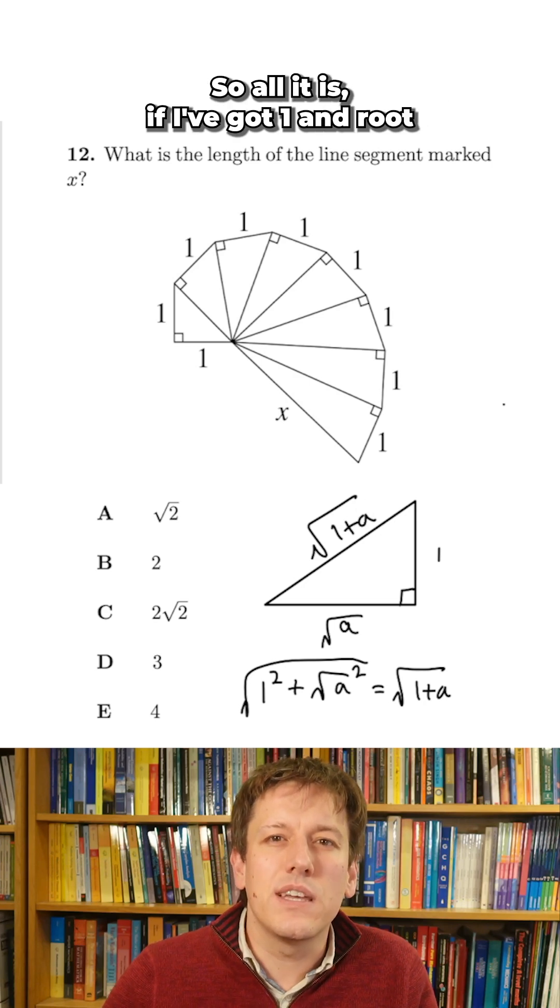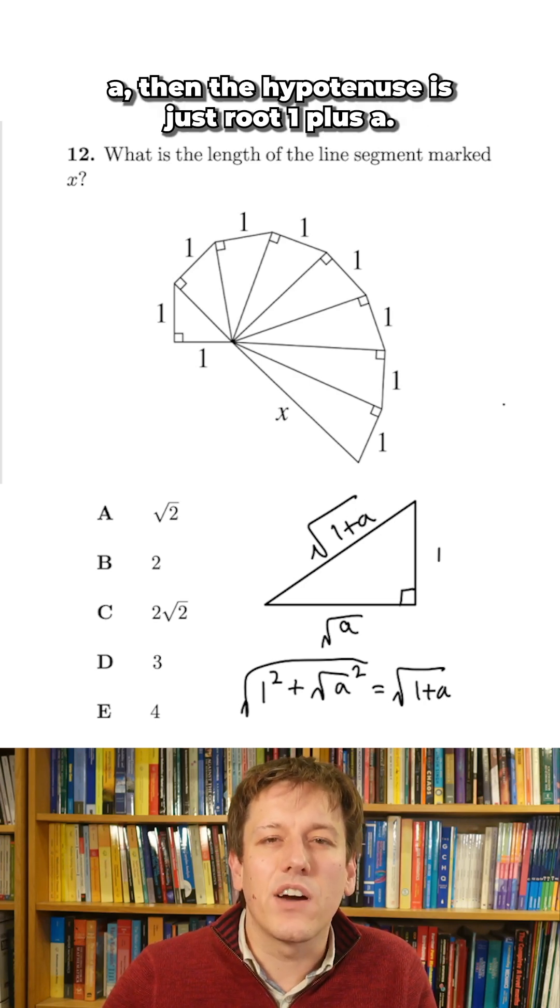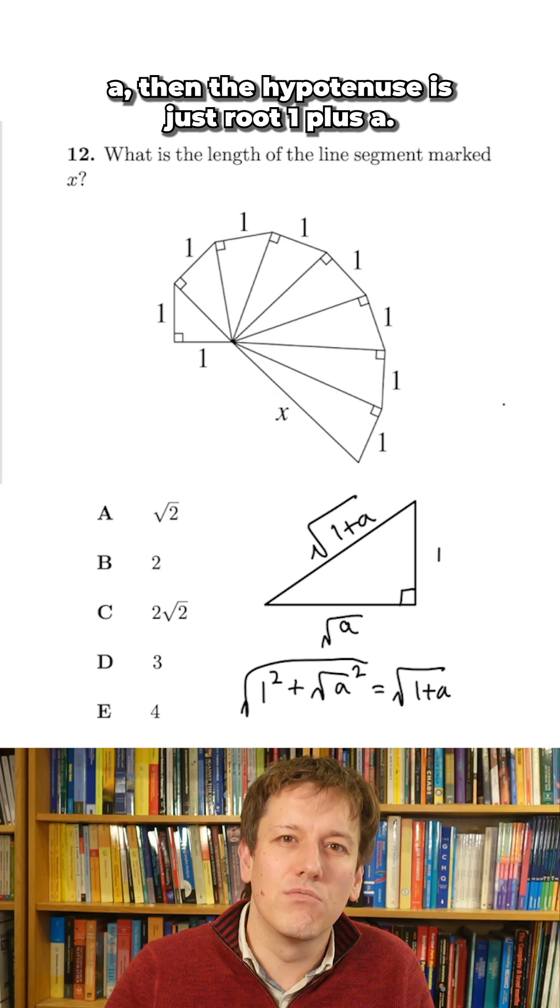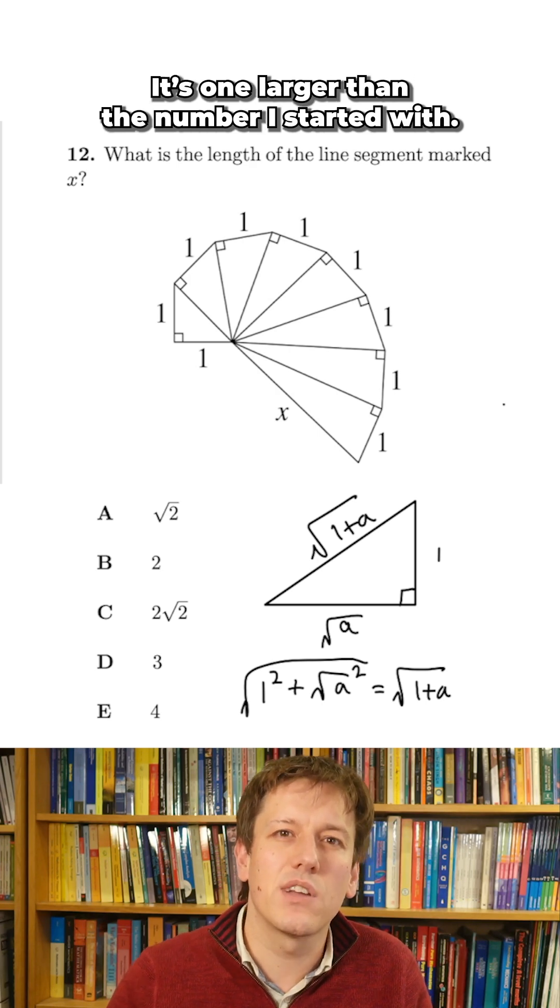So all it is, if I've got 1 and root a, then the hypotenuse is just root 1 plus a—it's 1 larger than the number I started with.